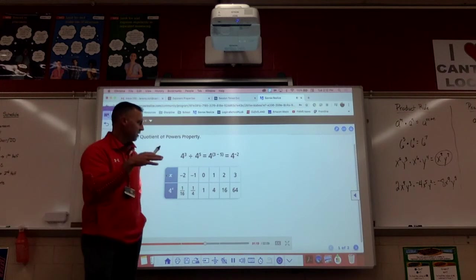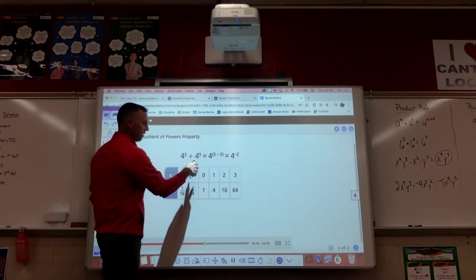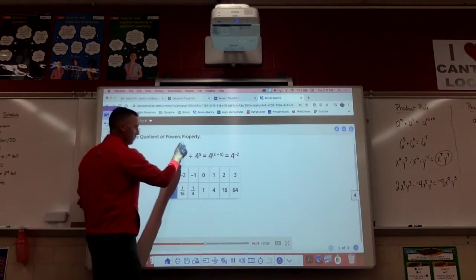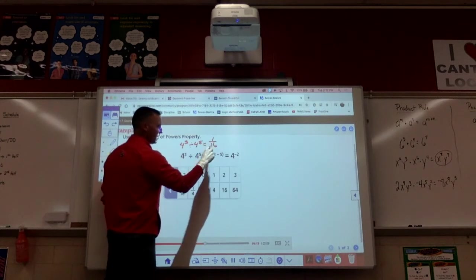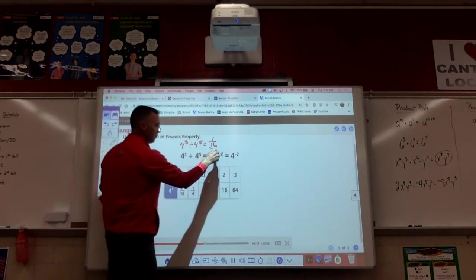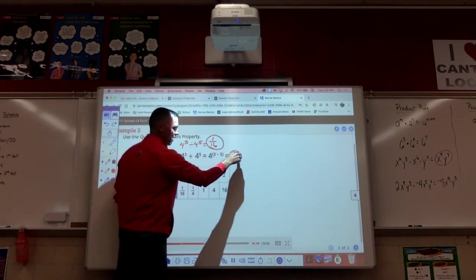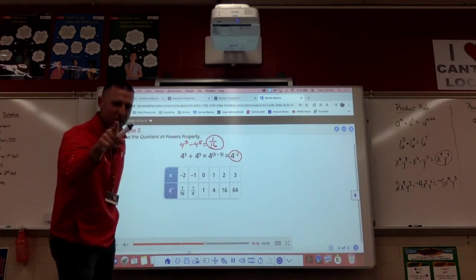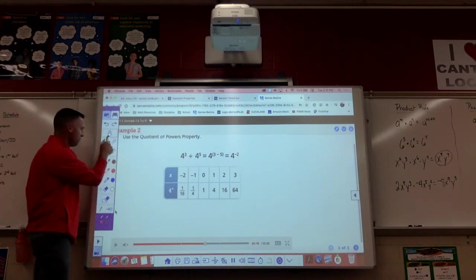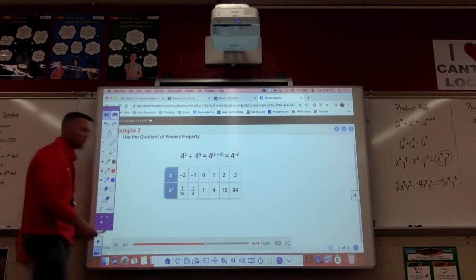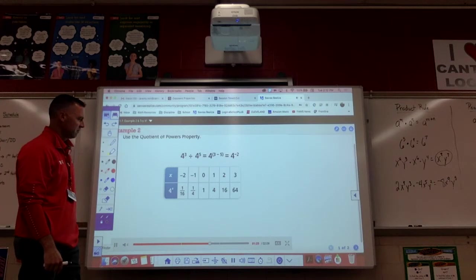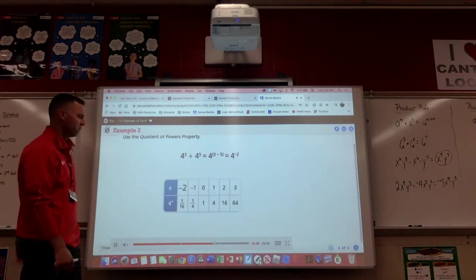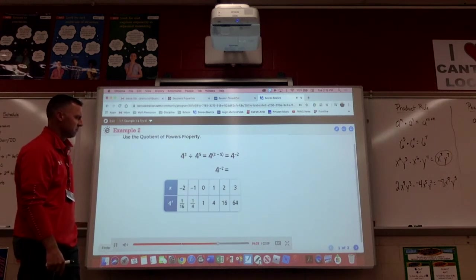A quicker way to simplify the expression is to use the quotient of powers property. The quotient of 4 to the third power and 4 to the fifth power is equal to 4 to the power of the quantity 3 minus 5, which is equal to 4 to the power of negative 2. The table shows some of the powers of 4. Now remember, earlier on in the video they said 4 to the third power divided by 4 to the fifth power. And I'm going to write it up here. 4 to the third power divided by 4 to the fifth power. First part of the video equaled 1 over 16. So we've got to make a connection between this and this. And guess what? That would be good.